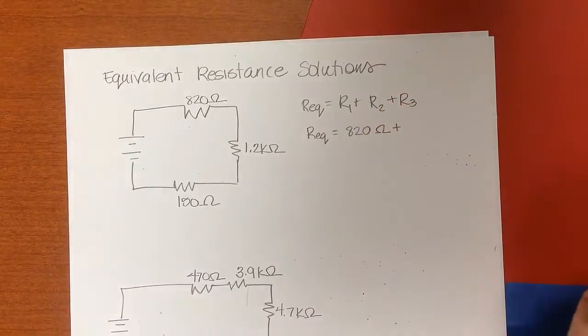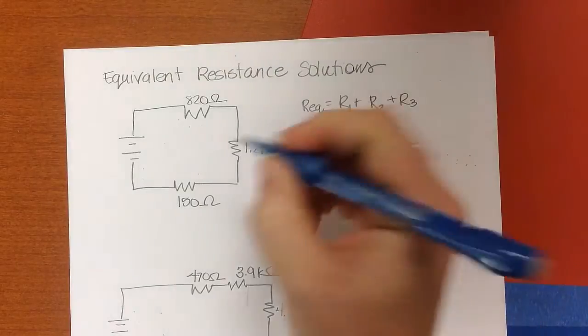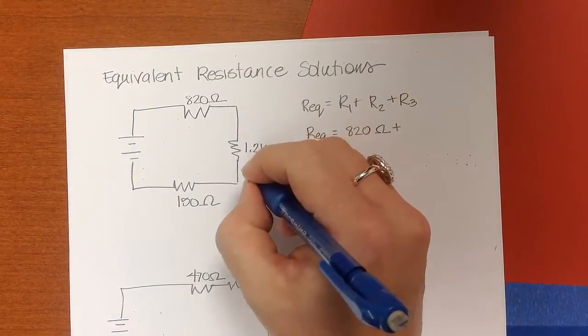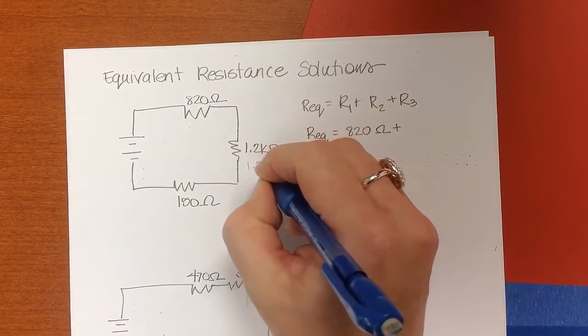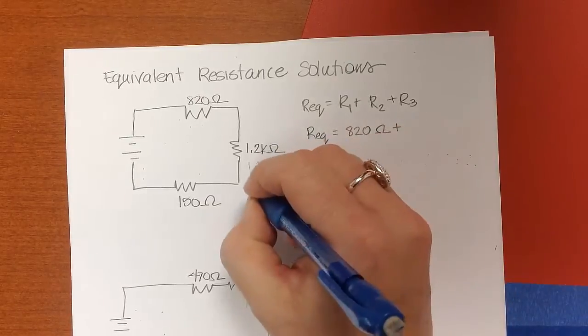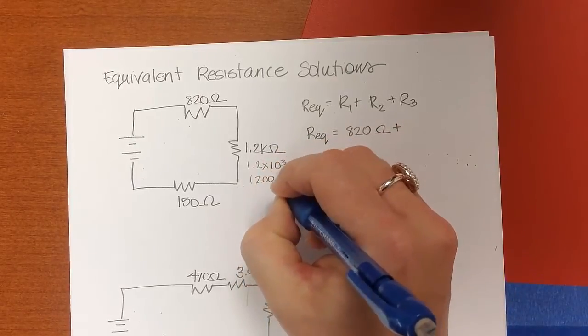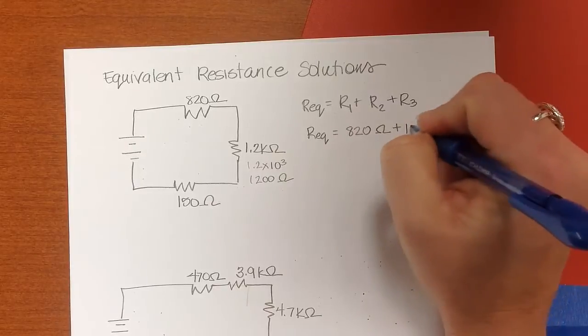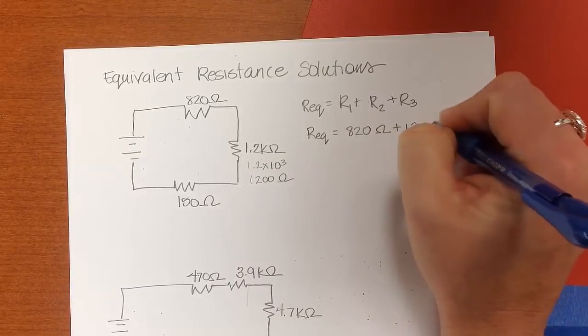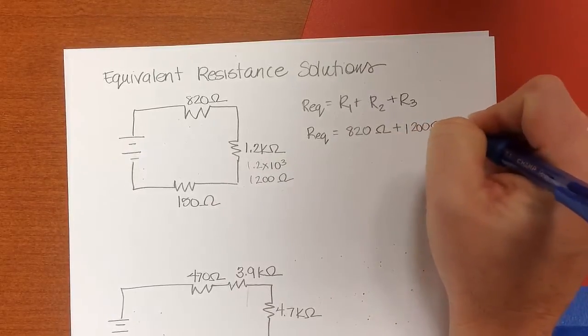So the equivalent resistance is going to be 820 ohms plus 1.2 kilo ohms, kilo is times 10 to the third, 1.2 times 10 to the third. So that would be 1,200 ohms plus 150 ohms.